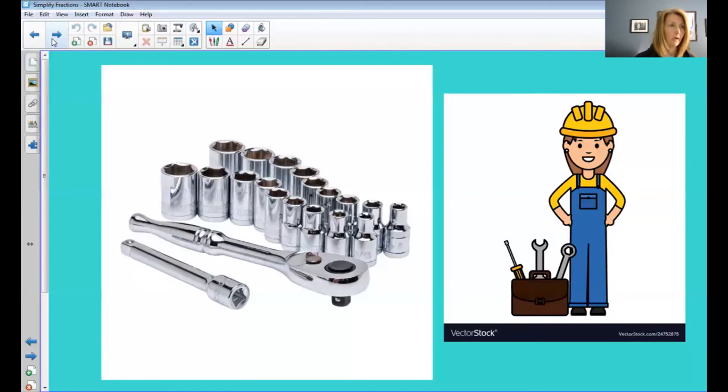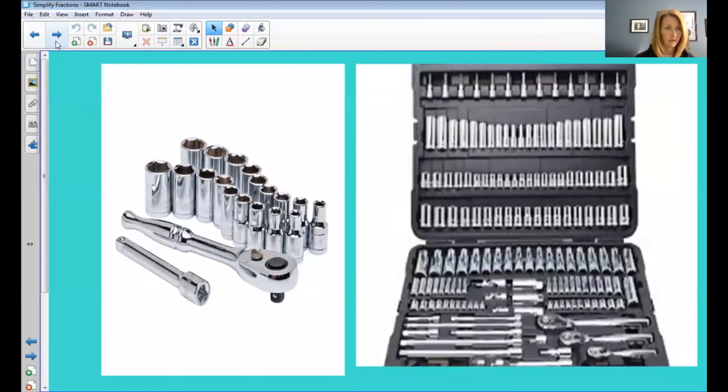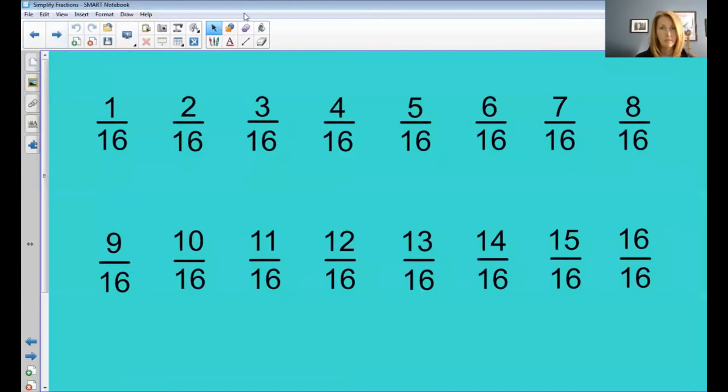So I need your help now. I've made a list of my sockets from smallest to largest. Your mission now is to simplify all of the fractions that can be simplified, and simplify them all the way. In other words, if you had fifty one-hundredths and you simplified it to five-tenths, it would be in a simpler form, but it would not yet be in the simplest form because five-tenths could be further simplified to one-half.